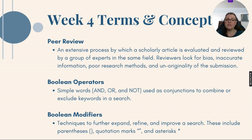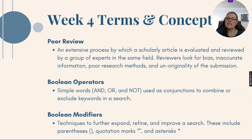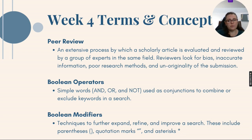Boolean operators are simple words — AND, OR, and NOT — which are used as conjunctions to combine or exclude keywords within a search. They are used in academic and research-based databases, where you type them in directly, but they can also be used in Google searches and other online searches. Boolean modifiers are techniques to further expand, refine, and improve a search, and include things such as parentheses, quotation marks, and asterisks. The two videos you will be watching on operators and modifiers go in depth and show examples of how to use both.